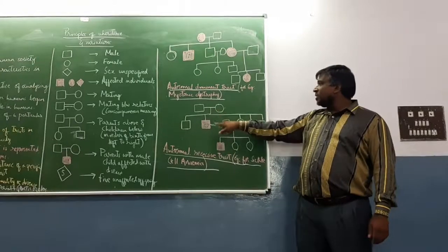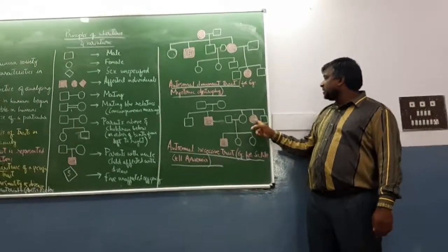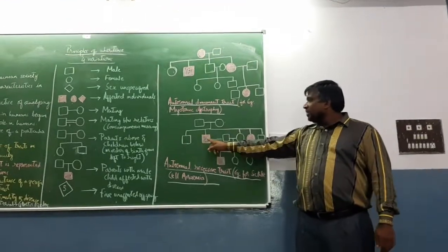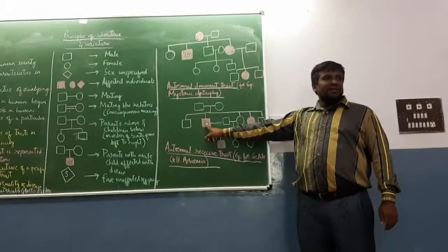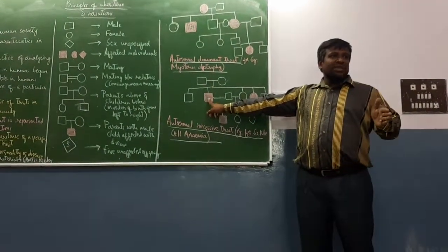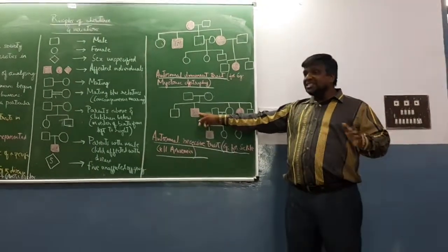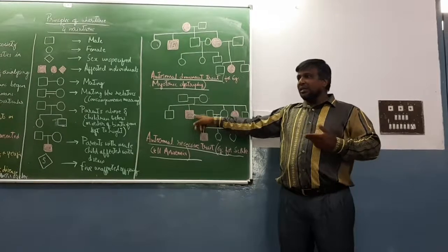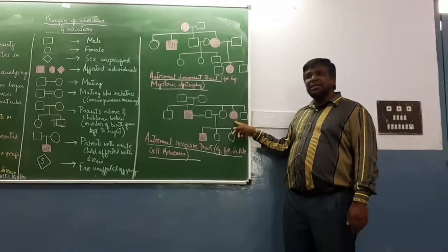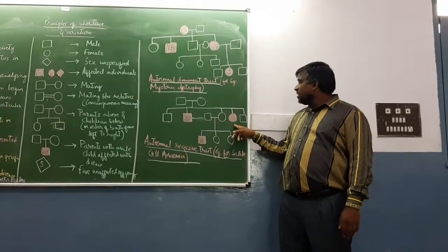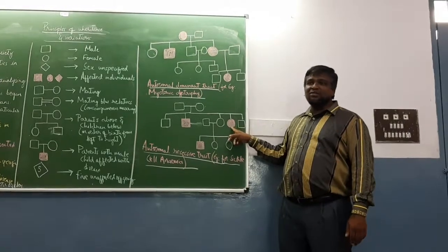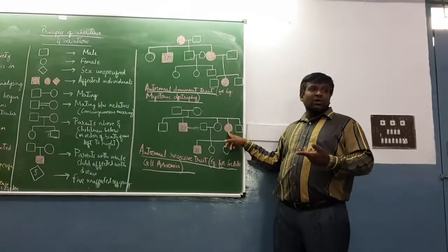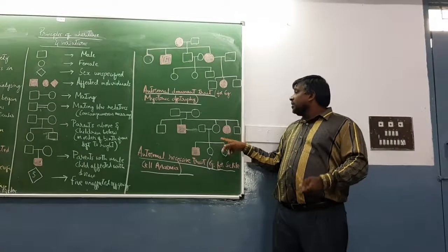How many offspring? Five offspring. Of these five offspring, second offspring - the son - is affected with the disease. The recessive trait is shown in double recessive. Fourth daughter is also affected with the disease. This is autosomal recessive trait.